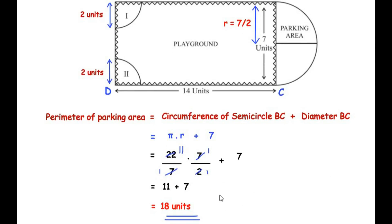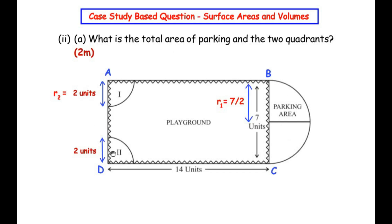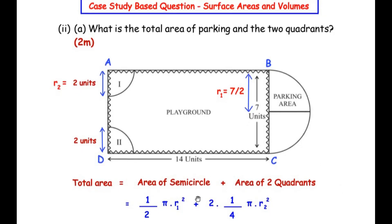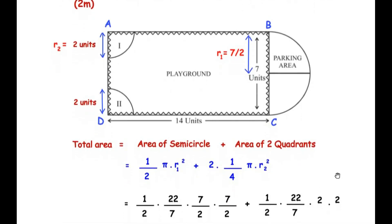The second sub question asks: what is the total area of the parking area and the two quadrants? We need to add the area of the parking area (semicircle) to the areas of the two quadrants. Let r1 = 7/2 be the radius of the semicircle and r2 be the radius of the quadrant. The total area equals the area of the semicircle plus the area of two quadrants. The formula is: (1/2)πr1² + 2 × (1/4)πr2².